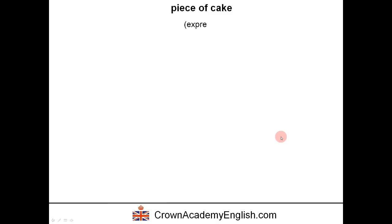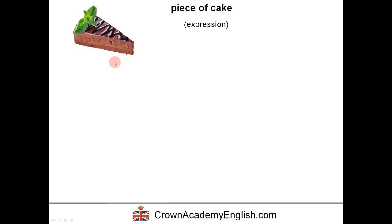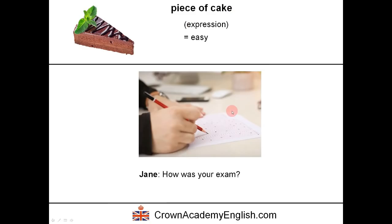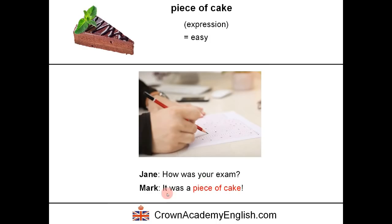'Piece of cake' is an expression. Obviously the literal meaning is a piece of cake, but the expression means 'easy.' If something is easy, it's a piece of cake. For example, Jane asks, 'How was your exam?' And Mark replies, 'It was a piece of cake.' We always use the indefinite article before this expression — 'a piece of cake' — meaning it was easy.